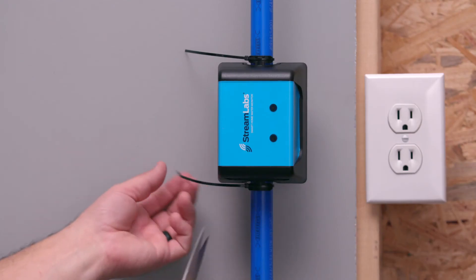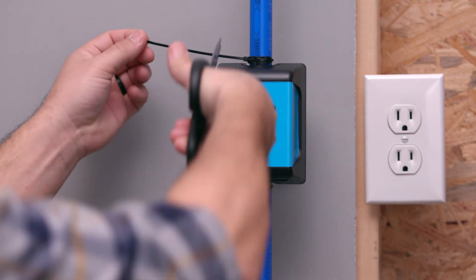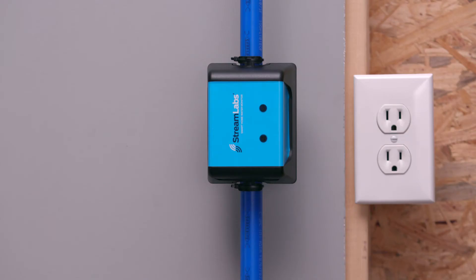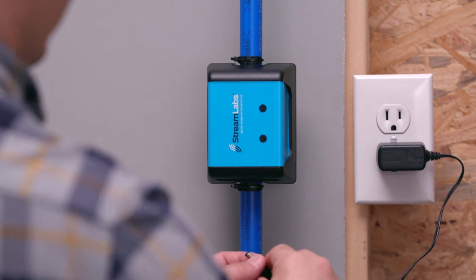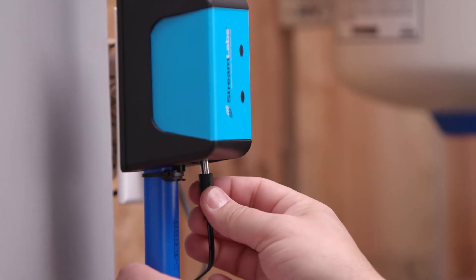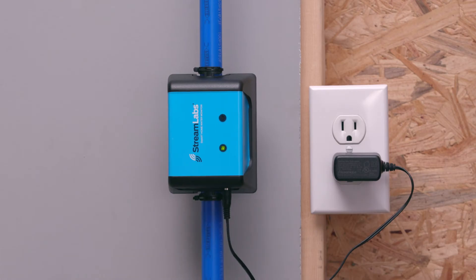Cut off any excess of the zip tie with your scissors if you prefer. Plug in the power supply to the nearest wall outlet and then into the monitor. The monitor will automatically reconnect to your Wi-Fi network as shown by the blue lights on the top of the device.